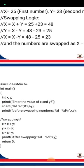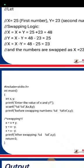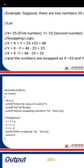We already saw the logic of swapping, which is now applied in our program code. The swapping logic is: x = x + y, then y = x - y, and then x = x - y. After applying this logic, we print the result using printf with 'after swapping: %d %d' and then x and y.